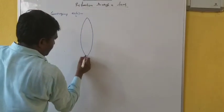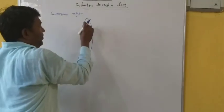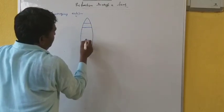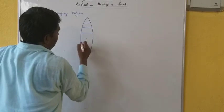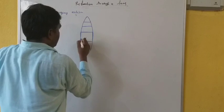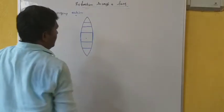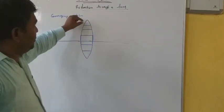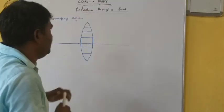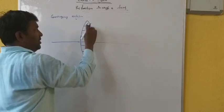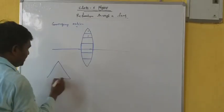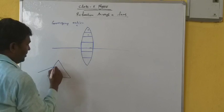Just see — this is our convex lens. And if we split it into very small pieces, it is looking like it is made up of so many different small prisms. Here it is like a prism, this is also like a prism, and here this is like a prism whose base is here. As we have seen the refraction through a prism.